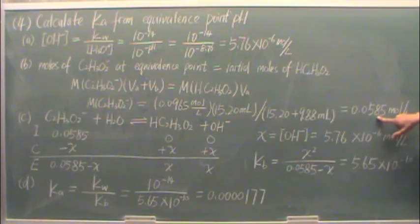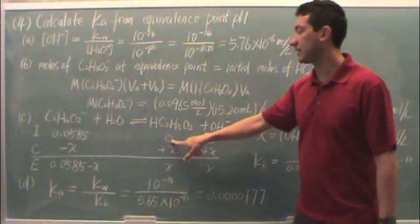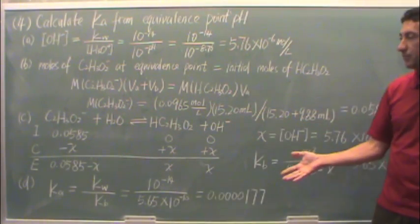We're going to get this number, 0.0585. This is the initial molarity we're going to put in the ICE table. So you see it right down here, we've got a 0 and a 0 because we're at the equivalence point.